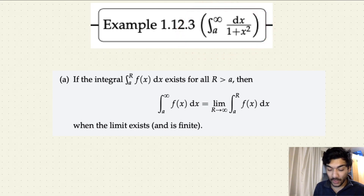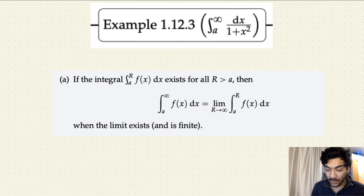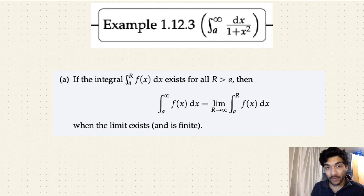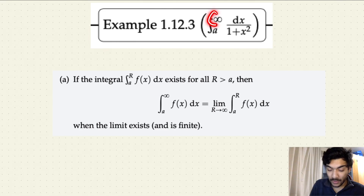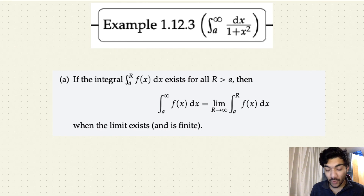Looking at this example, since we already covered how to identify improper integrals, you can notice that x squared plus one cannot be zero, so the function 1/(1+x²) is defined for all real numbers. Whatever real values we consider in our interval give us a proper integral. But since our upper limit is infinity, which is not a real number, this integral is said to be an improper integral.